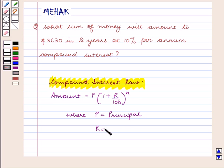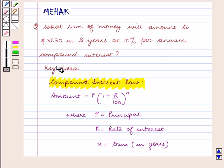R is equal to the rate of interest, and N is equal to time in years. With this key idea we shall proceed with the solution.